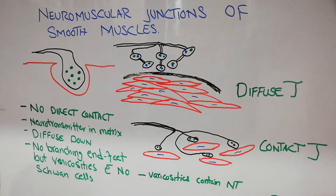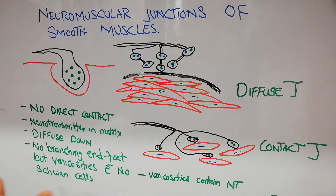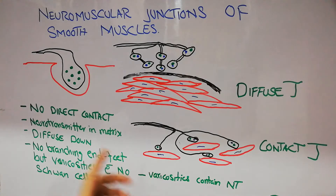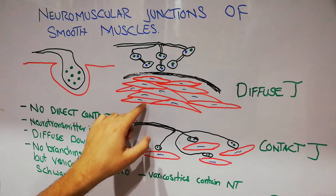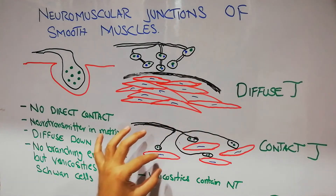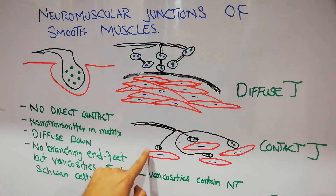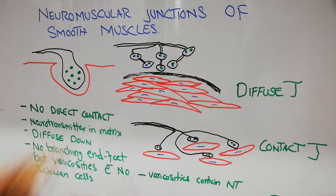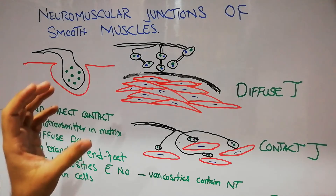The neuromuscular junctions of smooth muscles are basically of two types, corresponding to the two types of smooth muscles. In multi-unit smooth muscles, the muscle fibers act independently and are innervated separately. In unitary smooth muscles, the fibers act together, and only one neuron or one fiber activates the whole bunch of muscle fibers.